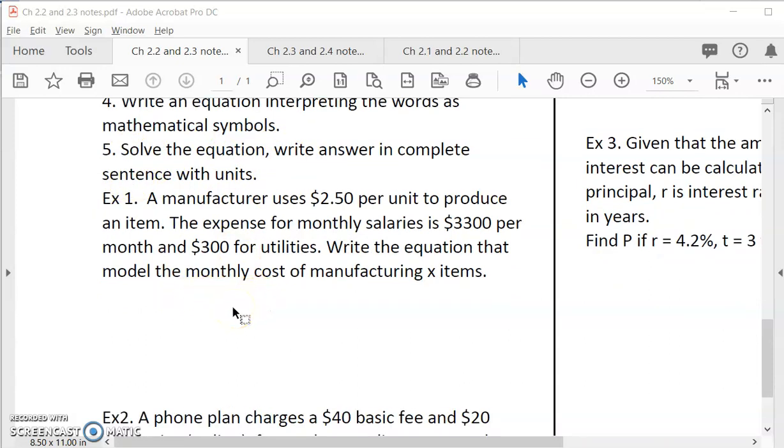Example one is an example where we would just need to write a model. So look at the situation. It's about a manufacturer. A manufacturer uses $2.50 per unit to produce an item. So if you want to produce one, you spend $2.50. If you want to produce two, you do $2.50 times two. The expense for monthly salaries is $3,300 per month and $300 for utilities. So these expenses are not related to the number of units you produce, but you have to pay anyway.